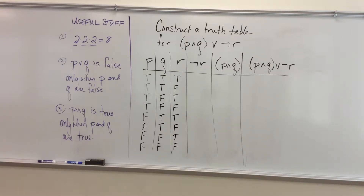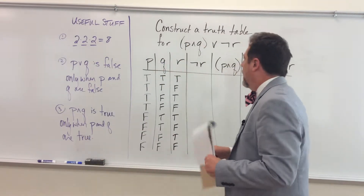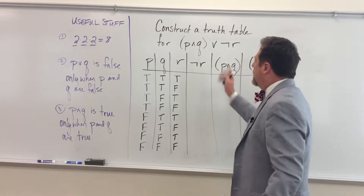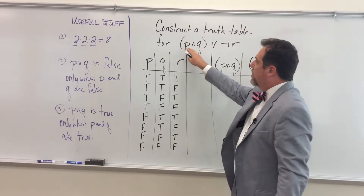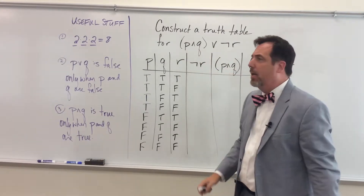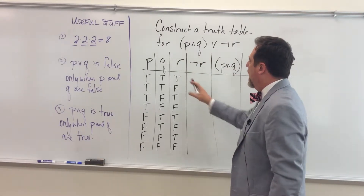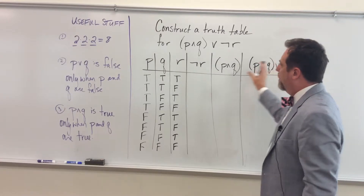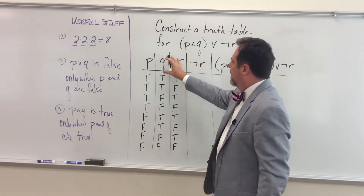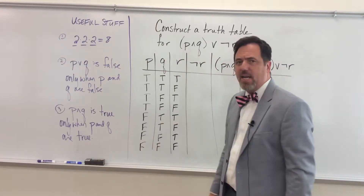Now we're going to do another compound proposition with P, Q, and R. Here's the compound proposition: P and Q, or not R. I already have, as I usually do, the skeleton of my table — the structure of my table.